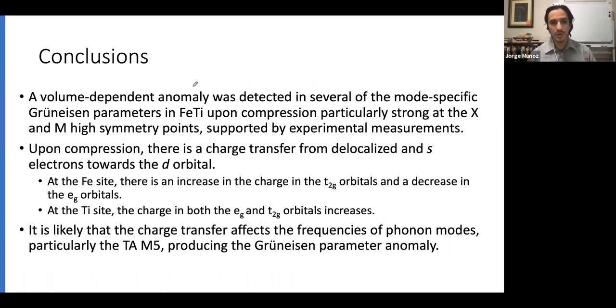In conclusion, we have a volume-dependent anomaly detected in several of the mode-specific Grüneisen parameters in iron titanium upon compression, particularly strong at the M and X high symmetry points, and supported by experimental measurements. Upon compression, there is a charge transfer from delocalized electrons and from the S orbital towards the D orbital. Then once there, it depends on whether they are on the iron side or titanium side, if they go into the EG or T2G.